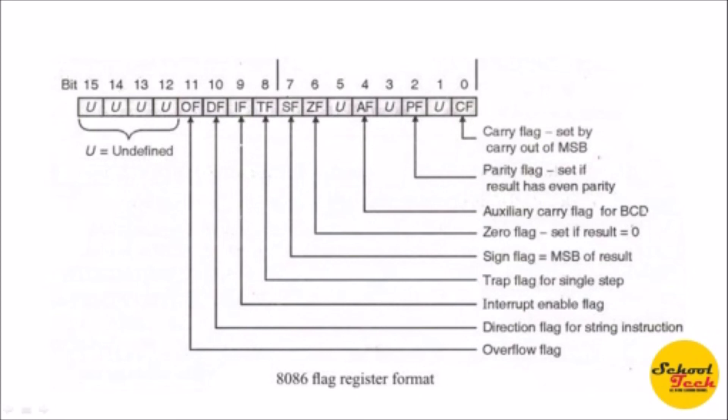The Direction Flag (DF) is linked with string instructions and defines the direction in which data is referenced. When DF is zero (reset), the SI and DI registers are automatically incremented by one or two. When DF is set to one, SI and DI registers are decremented by one or two. The Trap Flag (TF) is used in step-by-step operation to break the operation while debugging or taking the output of an assembly program.